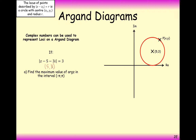We want all of the complex numbers that will have a distance of 3 from that centre point, and all of these distances are 3, so that forms a circle. Part a: find the maximum value of the argument of z in the interval from minus pi to pi.